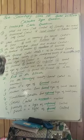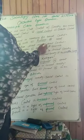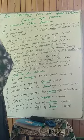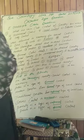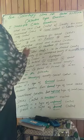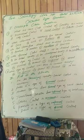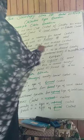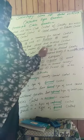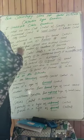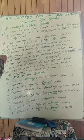Number three: who has classified direct and indirect control? Kaunsa sociologist ne control ko do categories mein divide kiya hai — direct and indirect control? The options are: Behand, Mackwat, Manhim, or Govish. The answer is Manhim, that means C. Manhim ne direct and indirect control ki classification di hai.